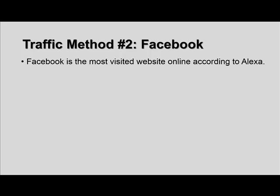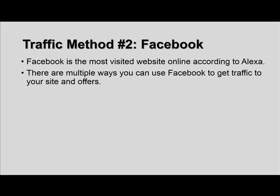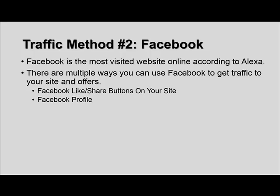Traffic method number two is Facebook — the absolute most visited website online according to Alexa. There are multiple ways to use Facebook: Facebook Like and Share buttons on your website (getting your content shared), a Facebook profile, Facebook pages, Facebook ads, sponsored posts, and Facebook groups. Getting your content shared by other people on Facebook through Like and Share buttons — available via AddThis, the DiGDiG plugin, or Facebook's own embed options — is really important as part of your overall social signals strategy.